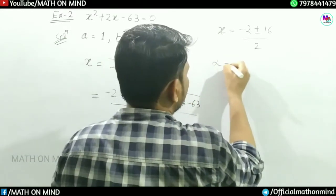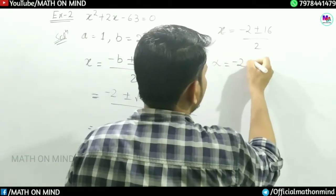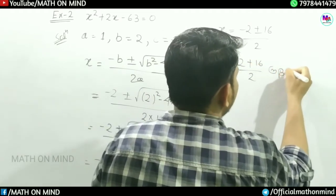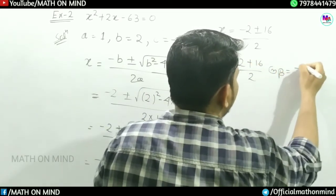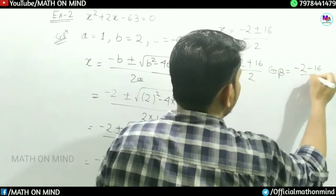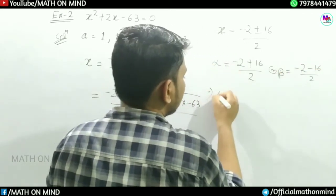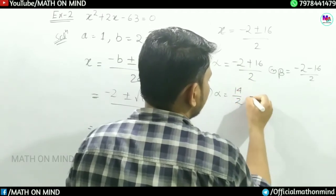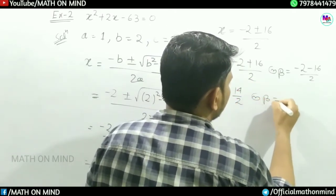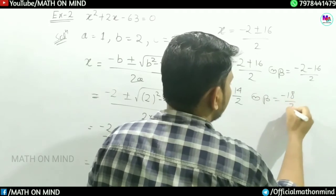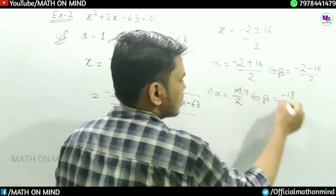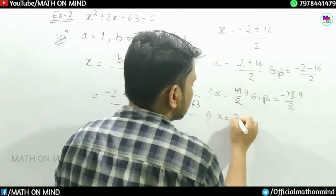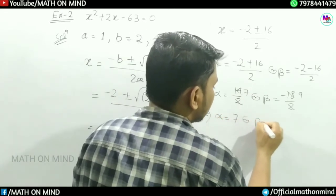x is equal to minus 2 plus 16 by 2, and x is equal to minus 2 minus 18 divided by 2. Therefore x is equal to 7 or x is equal to minus 9.